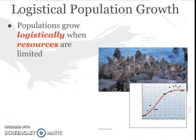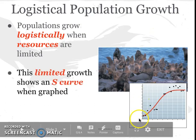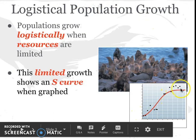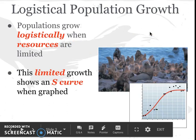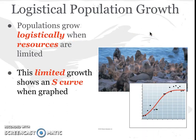We're going to look at how populations can grow in two different forms. The first is called logistic population growth, and populations grow logistically when resources are limited. Logistic growth results in this S-curve shape on the graph, where we see very few individuals at first, then a rapid increase, and then it levels off. When there are very few individuals in the population, we see a very small number.